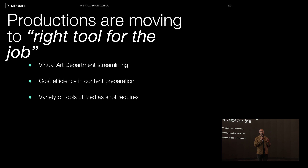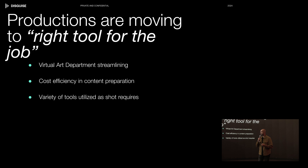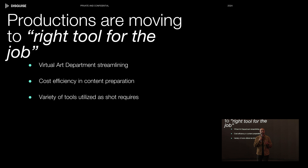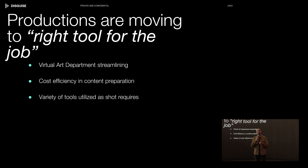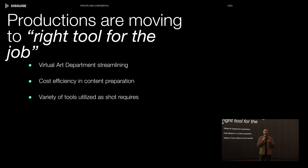Producers and creatives are adapting to the right-tool-for-the-shot approach. The virtual art department is streamlining and realizing there are more tools in the toolshed than just real-time rendering. We're seeing a lot more usage of 2D plates, 2.5D, and even experimentation with generative AI like Kubrick, Neural Radiance Fields, and Gaussian Splats. All of these things contribute to what we call content flexibility.